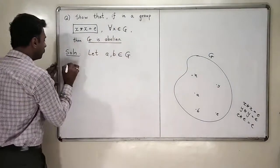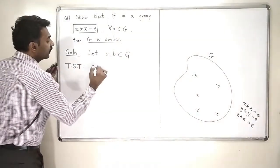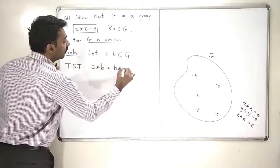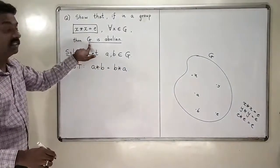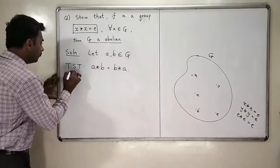What am I supposed to prove? I am supposed to prove that, so to show that, a star b is equal to b star a. Because we want to show that G is an abelian group. I want to show that a star b is equal to b star a.